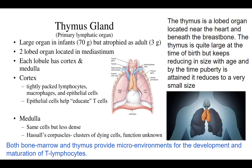The cortex keeps reminding lymphocytes about their enemies so that they are ready by the time the child grows up. When we are small, we develop immunity against various environments because the thymus is quite large. As we grow up, the thymus becomes very small, so immunity development in childhood is much stronger. Both bone marrow and thymus provide microenvironments for the development and maturation of cells.